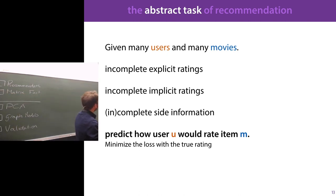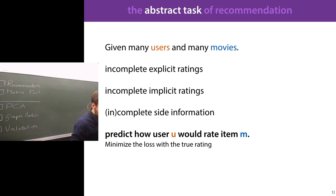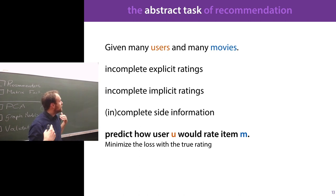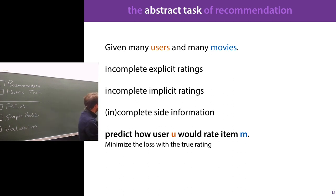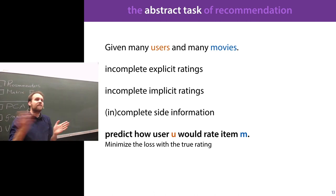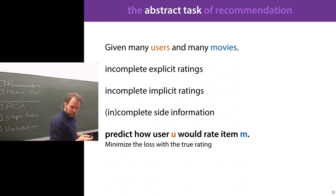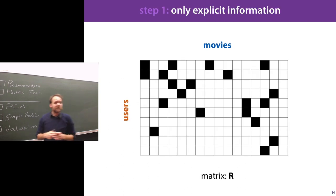We'll stick with users and movies for the rest of this lecture to make it concrete, but you can substitute any of these other use cases. So here's the abstract task: we've got many users and many movies, we are given information in the form of explicit ratings, implicit ratings, and side information. These are incomplete — we don't know for every user and every movie how they would rate it. What we want to predict is how any user would rate any particular item, and we want to minimize the loss with respect to the true rating.